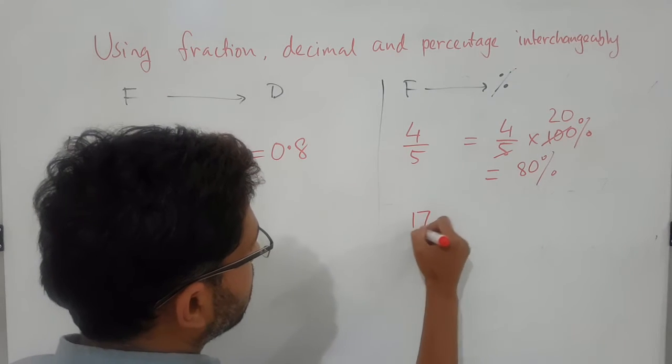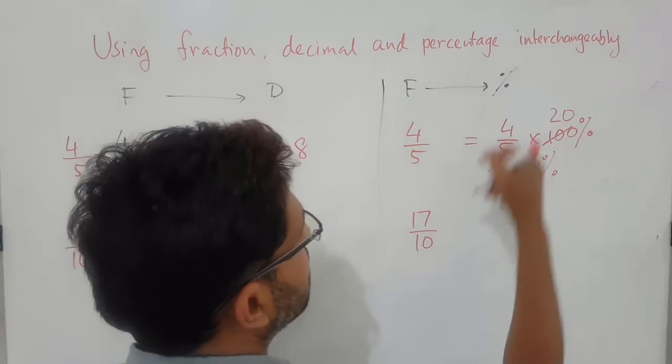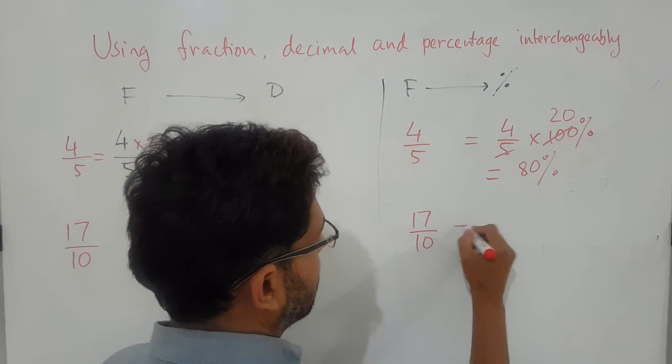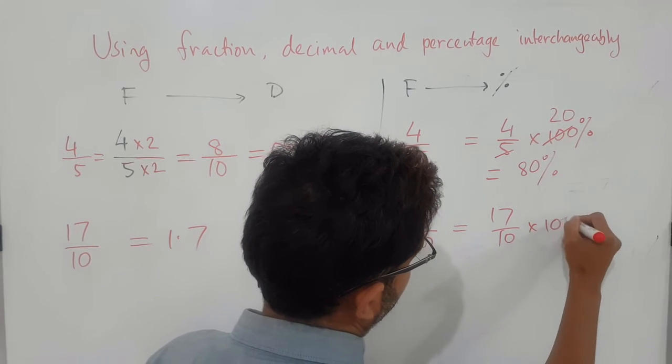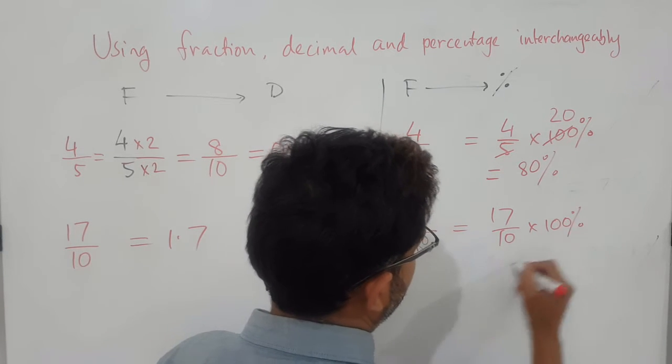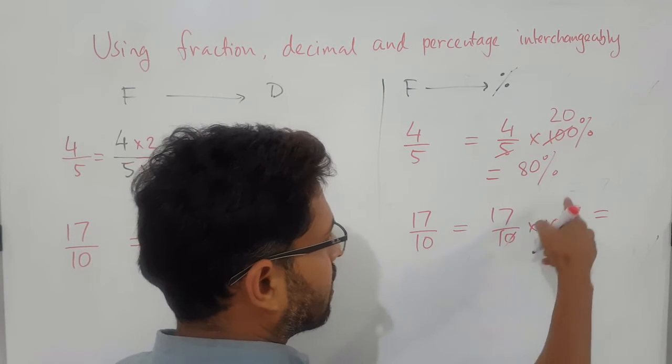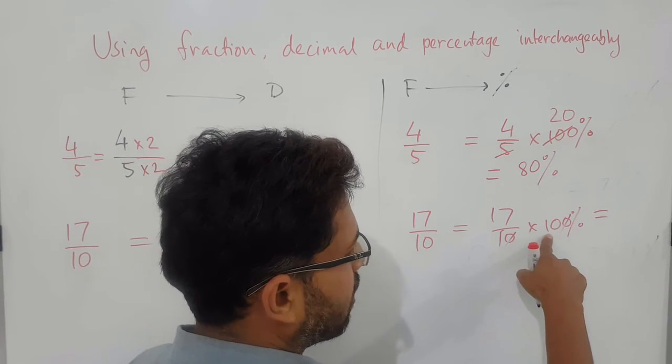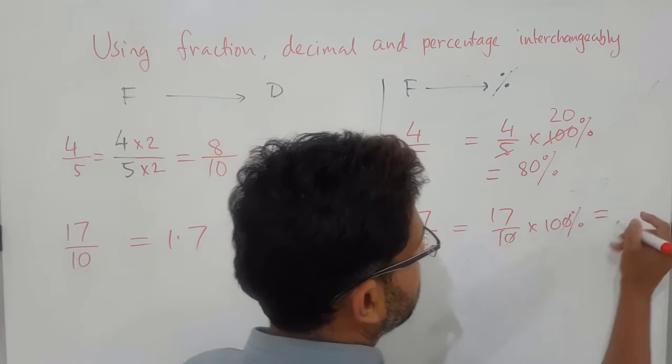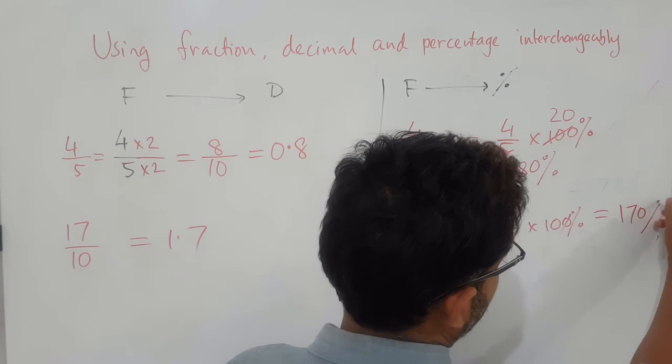If I said 17 over 10, we express in terms of percentage, this is basically 17 over 10 times 100 percent, which is giving us, so 10 times 10 is basically 100, so we have 10 there, 17 times 10, which is 170 percent.